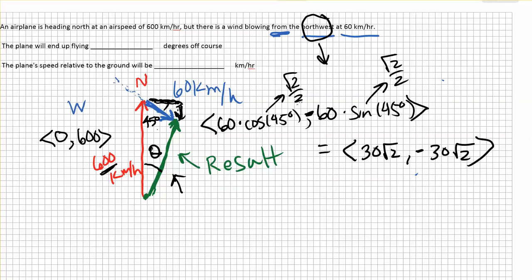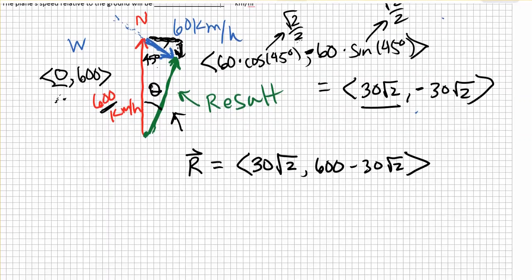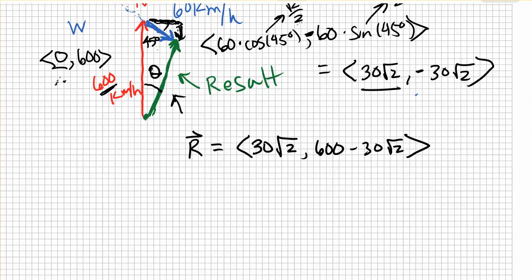So another way of solving this problem — if you don't want to use the law of cosines — is to find the component form of the green (resulting) vector by adding the plane's vector to the wind's vector. The resulting vector equals (0 + 30√2, 600 − 30√2), which is (30√2, 600 − 30√2). We can then come up with approximate values, but first let's find the magnitude.